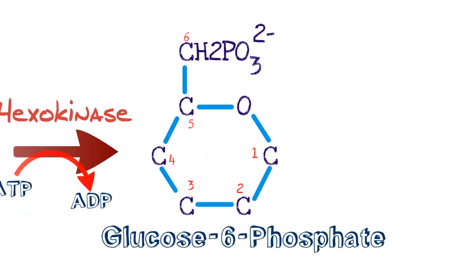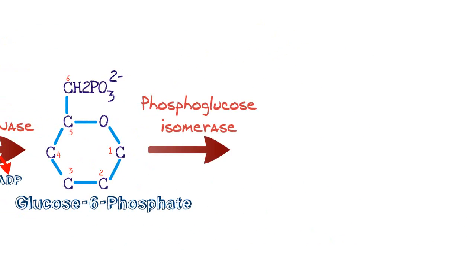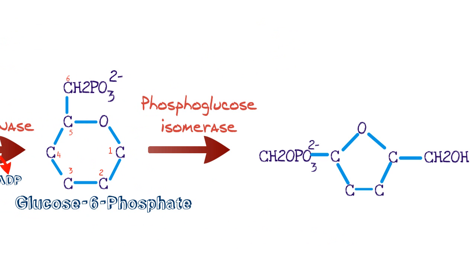The next step utilizes glucose-6-phosphate and the enzyme phosphoglucoisomerase. Isomerase means this enzyme creates an isomer — it just changes the configuration of glucose-6-phosphate. We're not adding or subtracting any molecules. Glucose-6-phosphate gets converted to a pentagon-like figure. There are still six carbons present, but now we have a central pentagon instead of the hexagon. This is called fructose-6-phosphate. The pentagon represents fructose, an isomer of glucose, with the phosphate group on the sixth carbon.